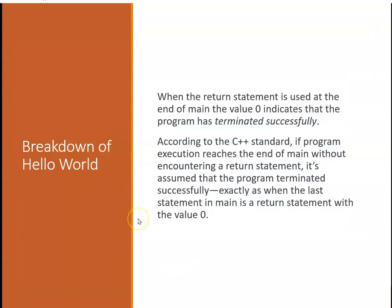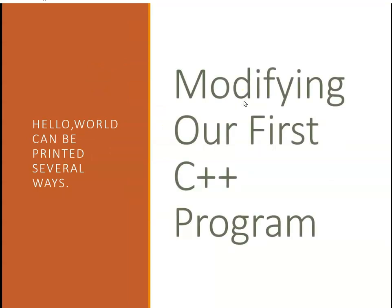When the return statement is used at the end of main, the value zero indicates that the program has terminated successfully. According to the C++ standard, if program execution reaches the end of main without encountering a return statement, it's assumed the program is correct and the return can often be omitted.